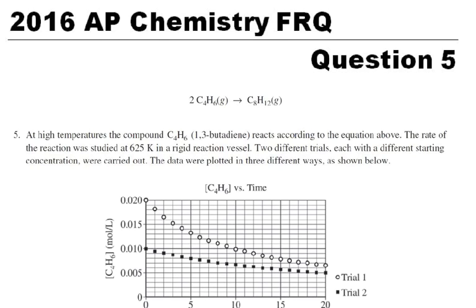Okay, for the 2016 AP Chemistry FRQ question number 5, we have this equation given right here: C4H6 turns into C8H12. Two of those turn into one of those.